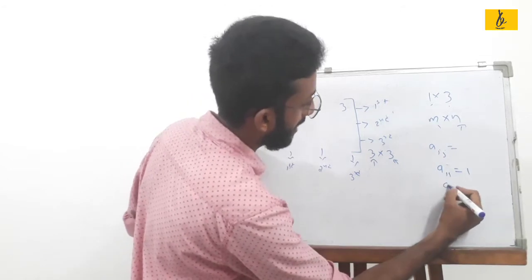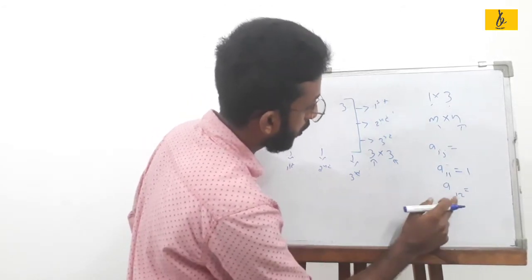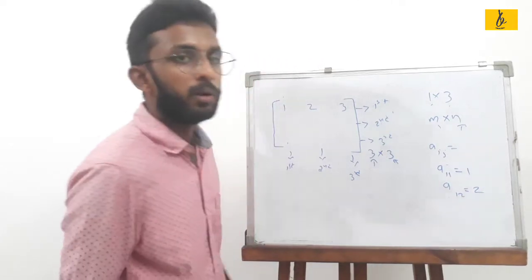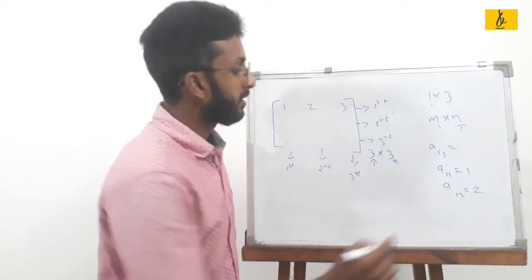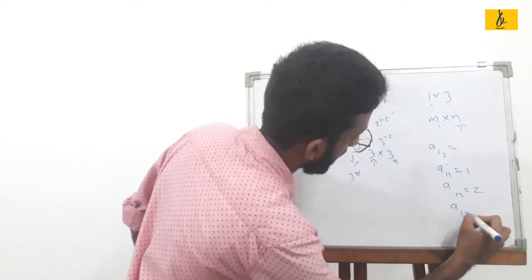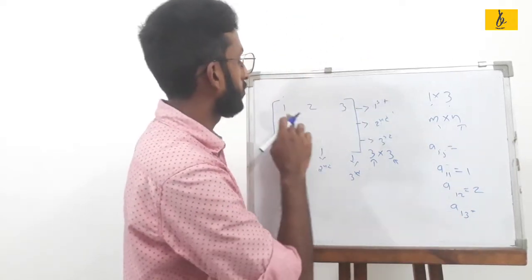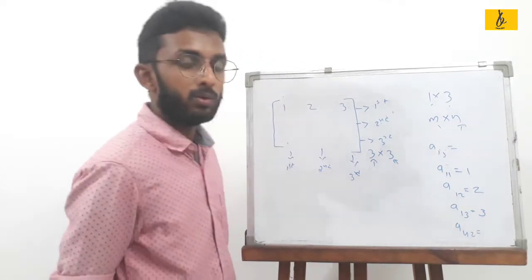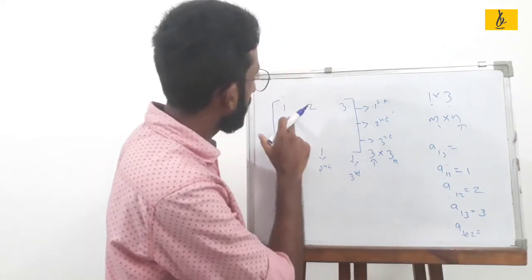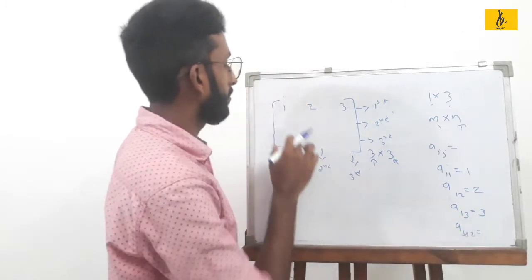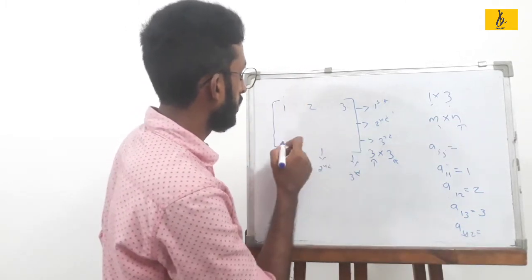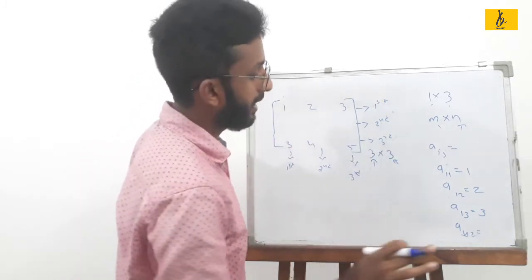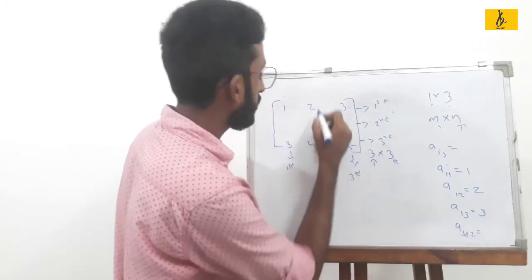In this case, we call element A12 as the value 8, A13 as 9. Then A21 is 4, A22 is 5. We have an example: A23 is the element in row 2, column 3.